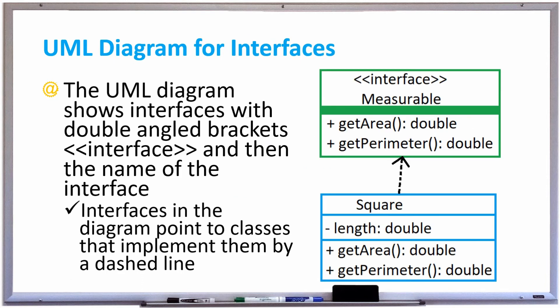In this picture we're drawing a UML diagram for interfaces. The UML diagram shows interfaces with double angled brackets and the word interface inside, and then underneath it the name of the interface.